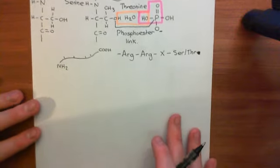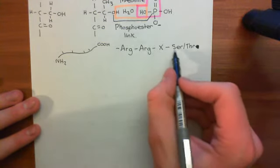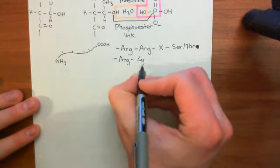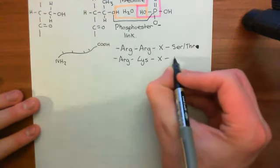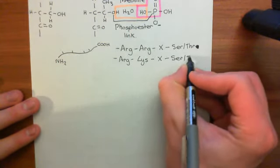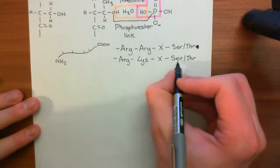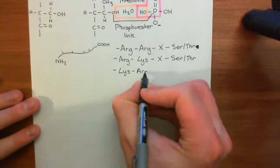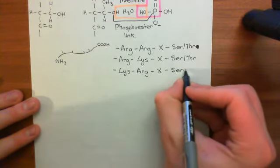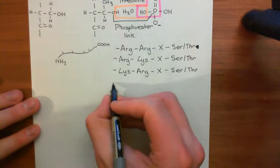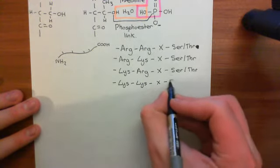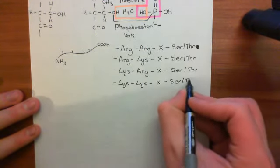There are other sequences like this which will cause phosphorylation. Another example: arginine followed by lysine, followed by anything, and then serine or threonine in position four. Another example: lysine, arginine, anything, and then serine or threonine. And finally: lysine, lysine, anything, and then serine or threonine.